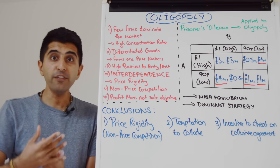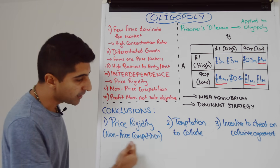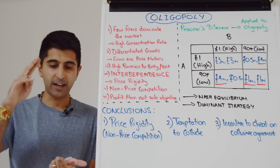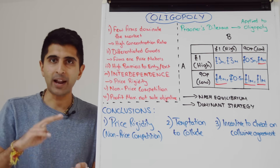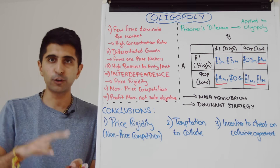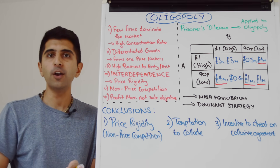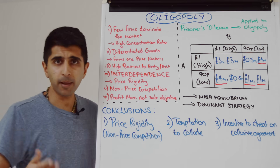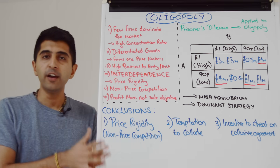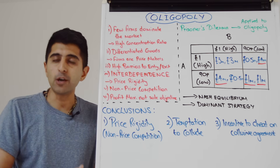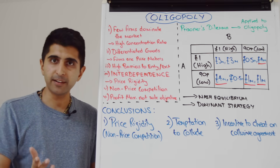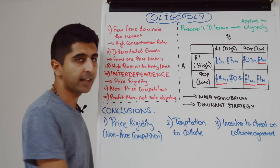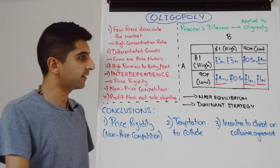Therefore, if firms are going to compete, they're going to compete on non-price factors, such as branding, advertising, quality of product, or quality of service. That's an outcome we also learned from our previous video when we looked at kinked demand curve. So game theory also takes us to price rigidity.